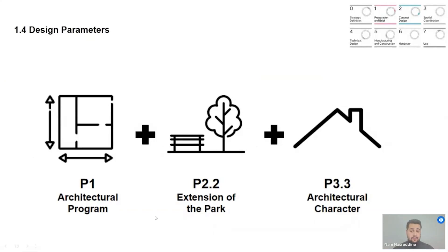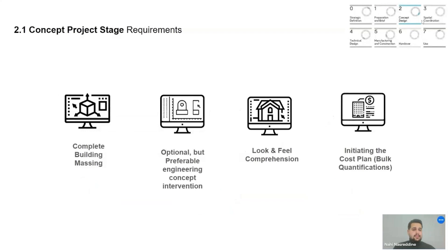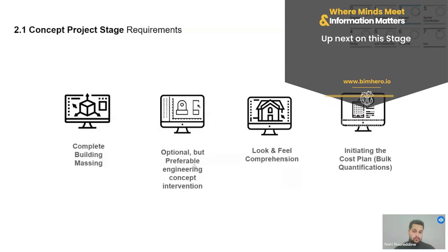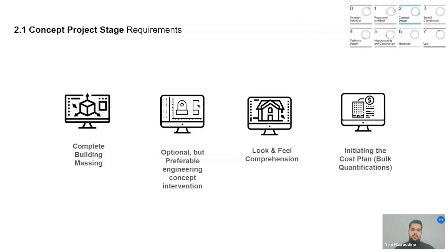To define the concept, we have three parameters: first, the architecture program; second, the extension of the park; and third, the architectural character of the pitched roof. At this stage, as per the RIBA Plan of Work, we need a complete building massing with defining spatial relations. It's also important to understand the look and feel in a comprehensive way, and to initiate the cost plan with bulk quantifications, especially if taking design-and-build procurement rules — so contractors and design teams start working together from stage three.